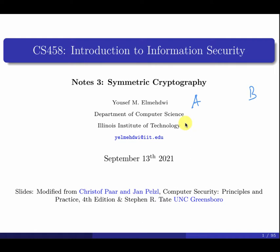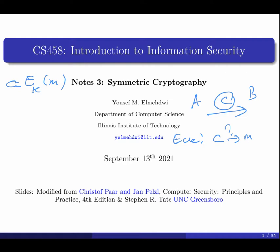We also talked about different types of attacks. We have Alice and Bob communicating, and a bad guy intercepts. The simplest attack is the ciphertext-only attack: the attacker knows only the ciphertext and tries to figure out the plaintext without knowing the key. The attacker's ultimate goal is to find the key — if you know the key, you can read all communications encrypted with it.